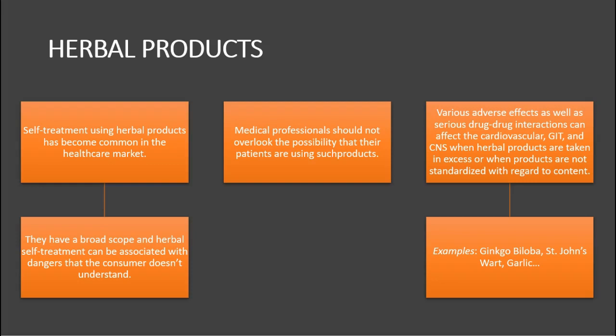Herbal products — self-treating using herbal products has become common, but carries dangers that the consumer may not even understand. Mixing herbal products with normal medications can have a toxic effect, so always talk to your doctor before taking them. Medical professionals should not overlook the possibility that their patients are using such products. Serious drug-drug interactions can affect the cardiovascular system, gastrointestinal tract, and CNS when herbal products are taken in excess or are not standardized. Examples include ginkgo biloba, St. John's wort, garlic, and turmeric.